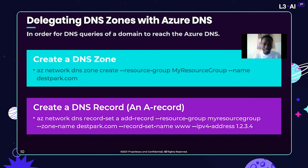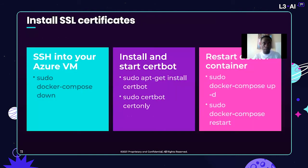Then create a DNS record — in this case, an A record is given as an example. After that, you can proceed to install the SSL certificates. SSH into your Azure VM, then install and start the certbot. Once that's done, make sure that you restart your container for the changes to take effect.